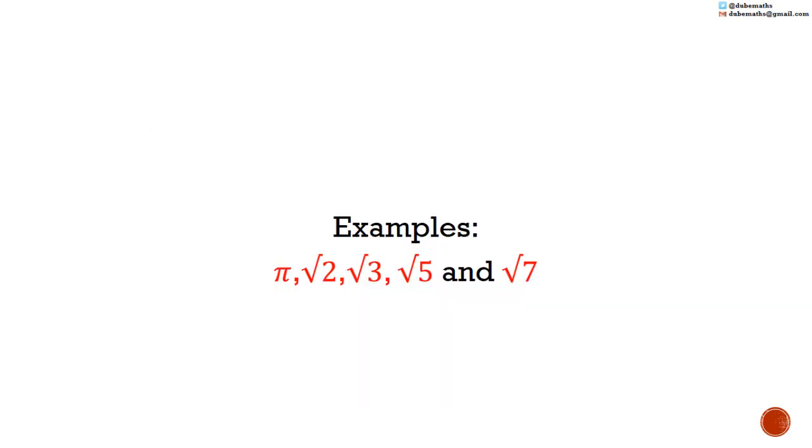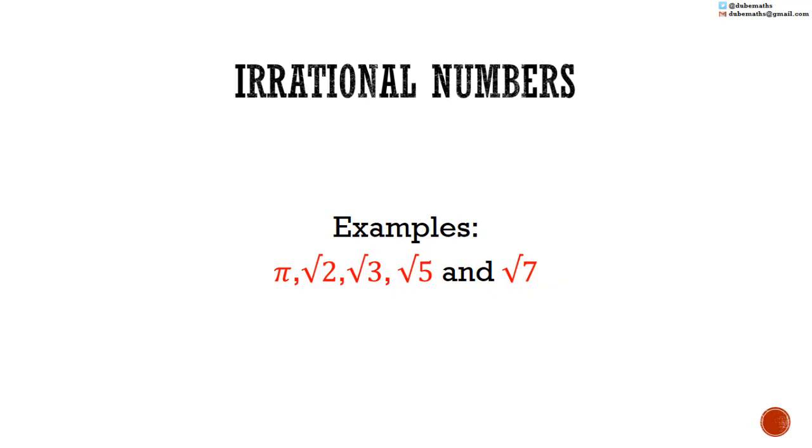Similarly, the square root of 2 does not terminate and has no identifiable pattern, no repeating pattern. Because these numbers never terminate and have no repeating pattern, we cannot express them exactly as a fraction. So they are not fractions. But they are still numbers. These numbers that cannot be expressed as a fraction are called irrational numbers.